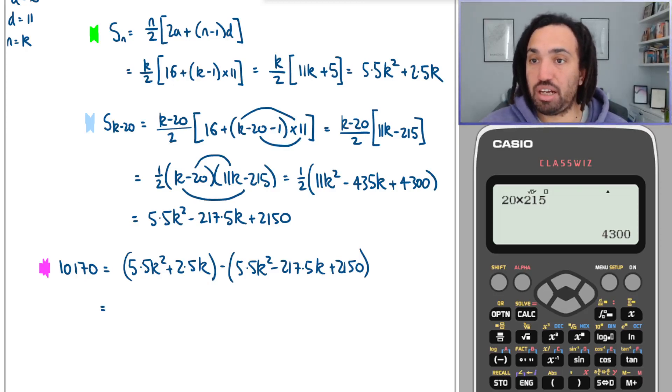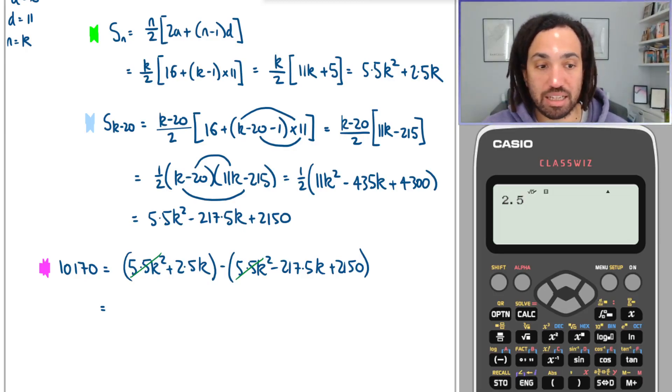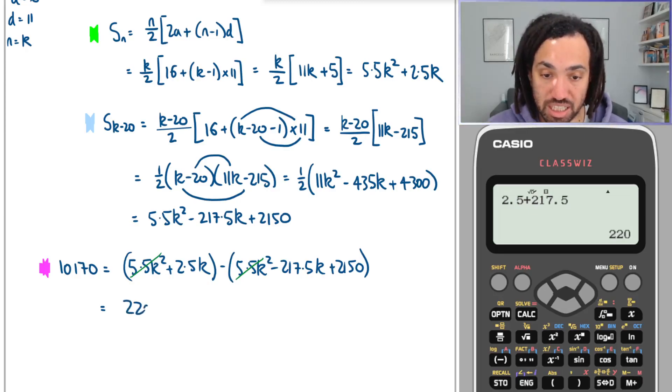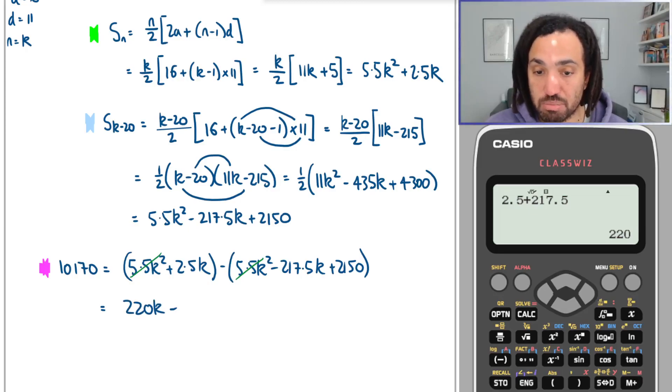Okay, so what we're going to do here. Well, we're going to cancel these because they're the same and we're taking one away from the other. I'm going to have a total of 2.5k, and I am then going to minus minus, so plus 217.5. So that gives me 220k. And then I'm also going to minus 2,150, and all the while that's equal to this.